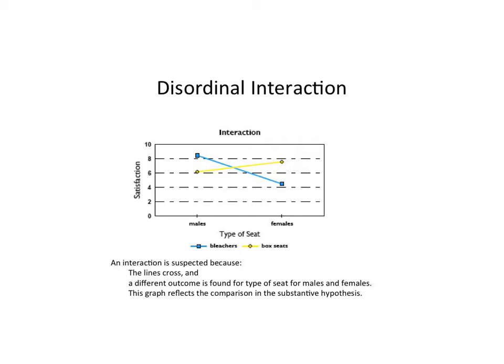There are a couple of different types of potential interactions. One is called a disordinal interaction, where the lines are crossing within the area of the graph. For those in the box seats, satisfaction goes from about 6 to 8 — lower for males, higher for females. But we see the opposite for bleacher seats, where males have higher satisfaction than females. So satisfaction at the ballpark is dependent on what type of seat they sit in.